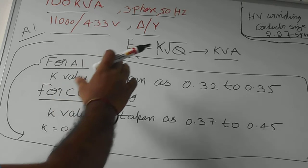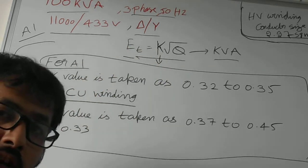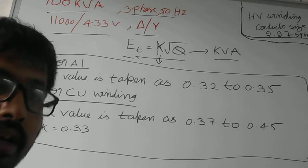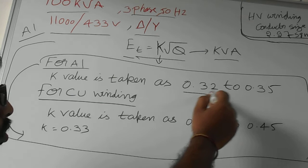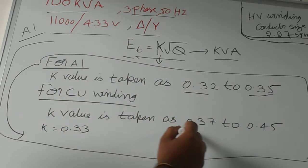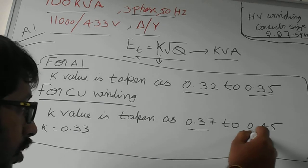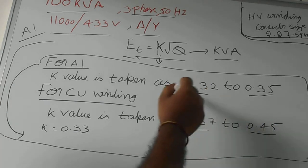For K, the value depends upon the nature of material, that is aluminum winding or copper winding. For aluminum winding the k value should be taken as 0.32 to 0.35 and for copper winding we have to take as 0.37 to 0.45. We can take any value between these numbers.